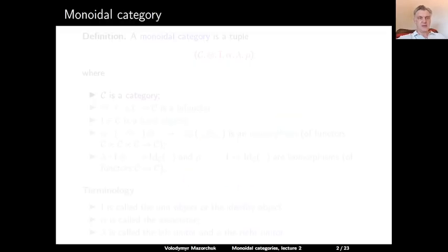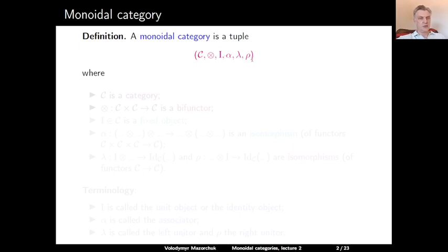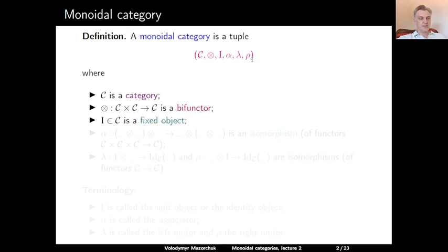We start with the classical definition of a monoidal category. A monoidal category is a tuple C, tensor product, I, alpha, lambda, and rho, where C is a category, tensor product is a bifunctor on C — meaning a functor from C cross C to C — and I is a fixed object of C.